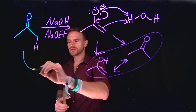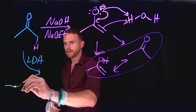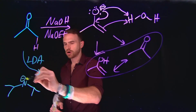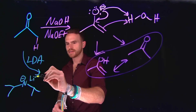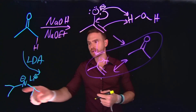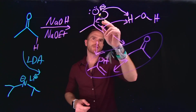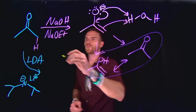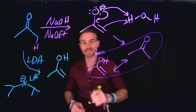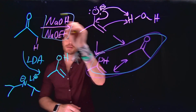Instead, if you were to use a base like LDA, which stands for lithium diisopropyl amine — a diisopropyl amine that is negatively charged with lithium as the counterion — because it's so sterically bulky around the nitrogen atom, it will not allow that reprotonation process to occur. Instead, you will fully form the enolate species exclusively, as opposed to a mixture of products when using the other types of bases.